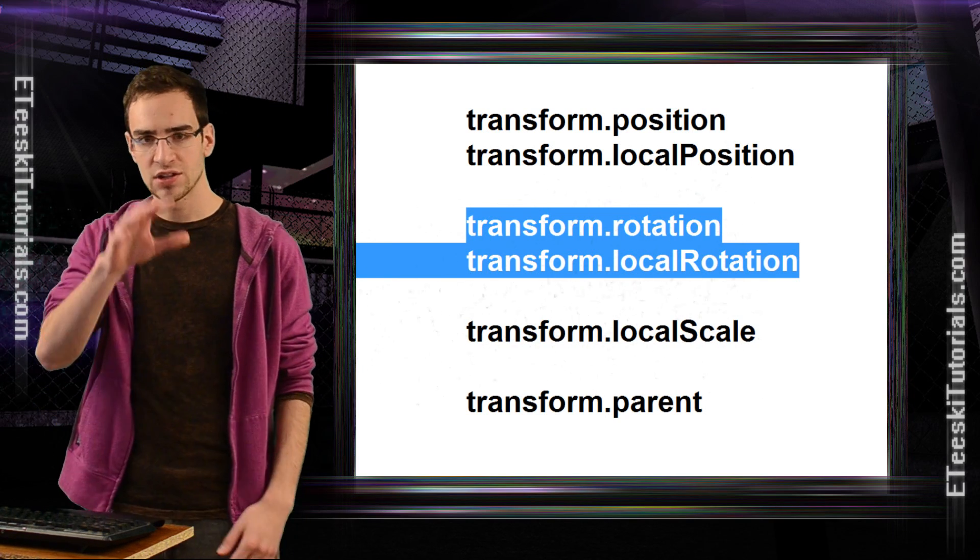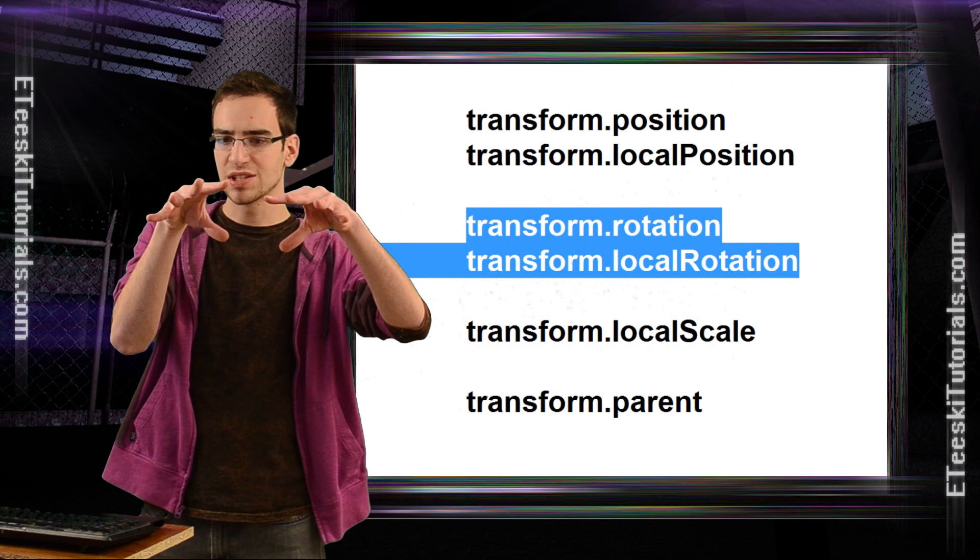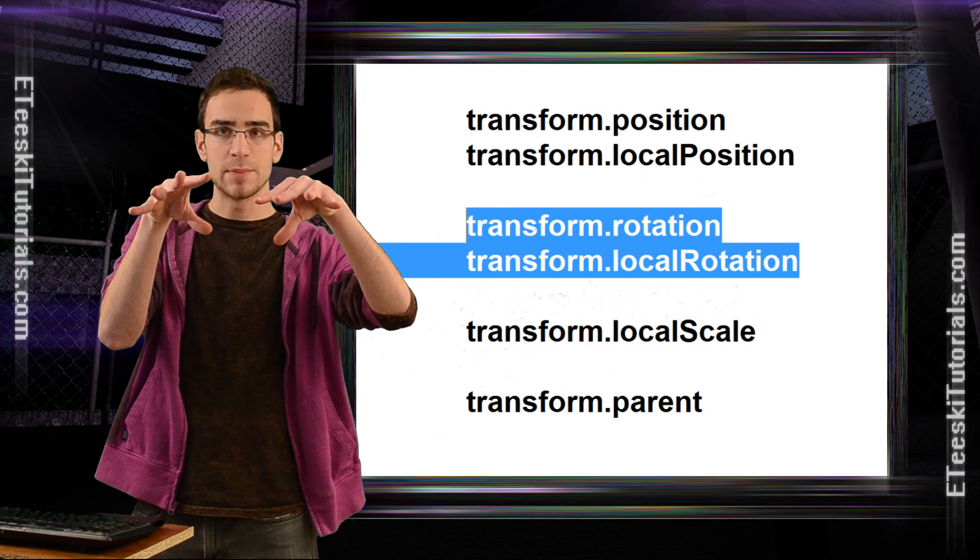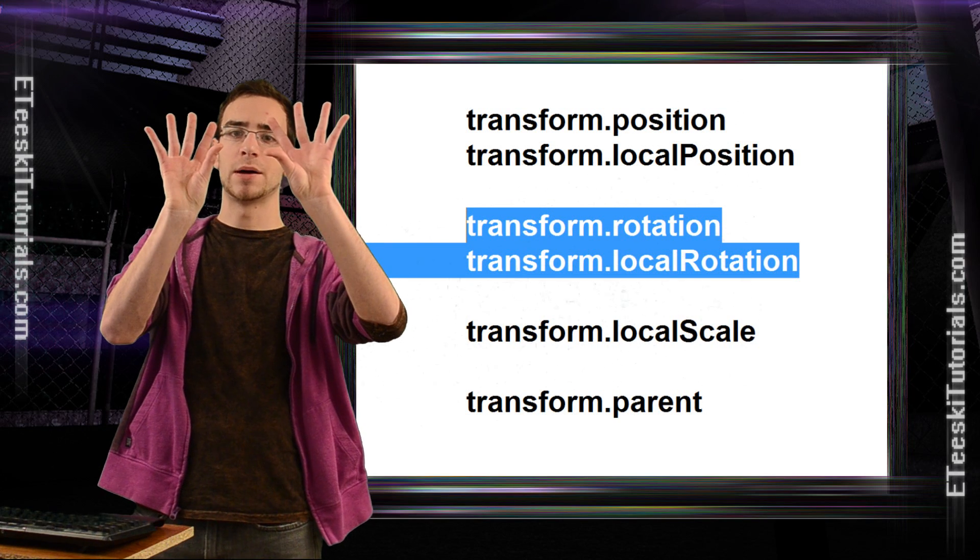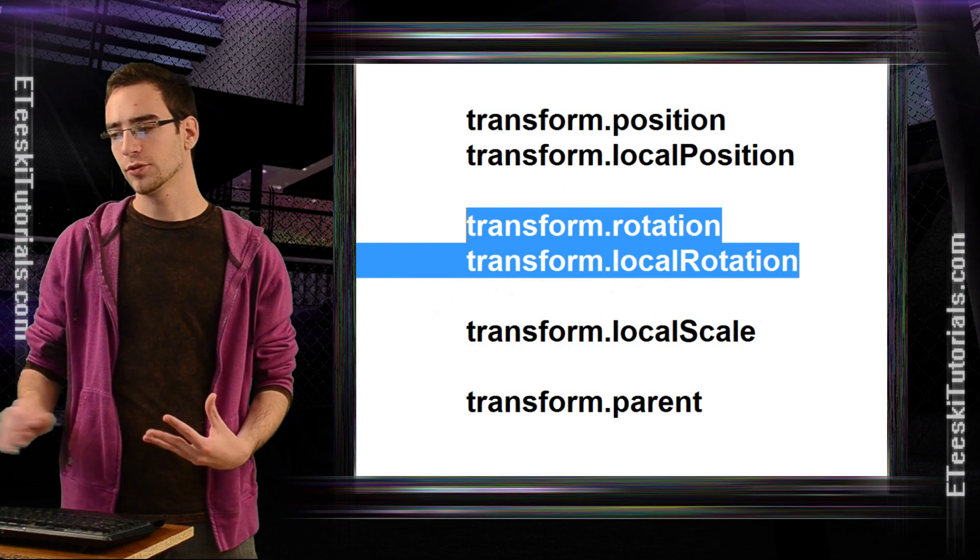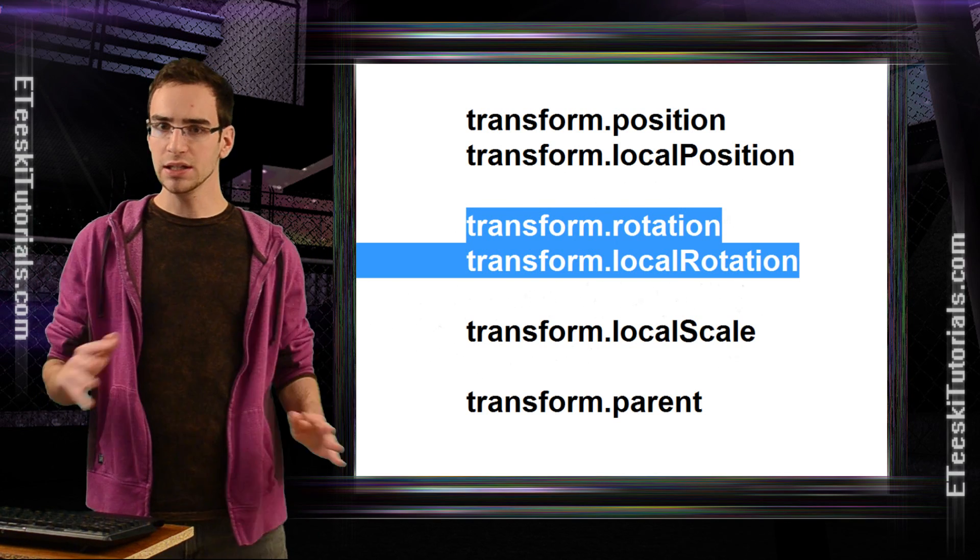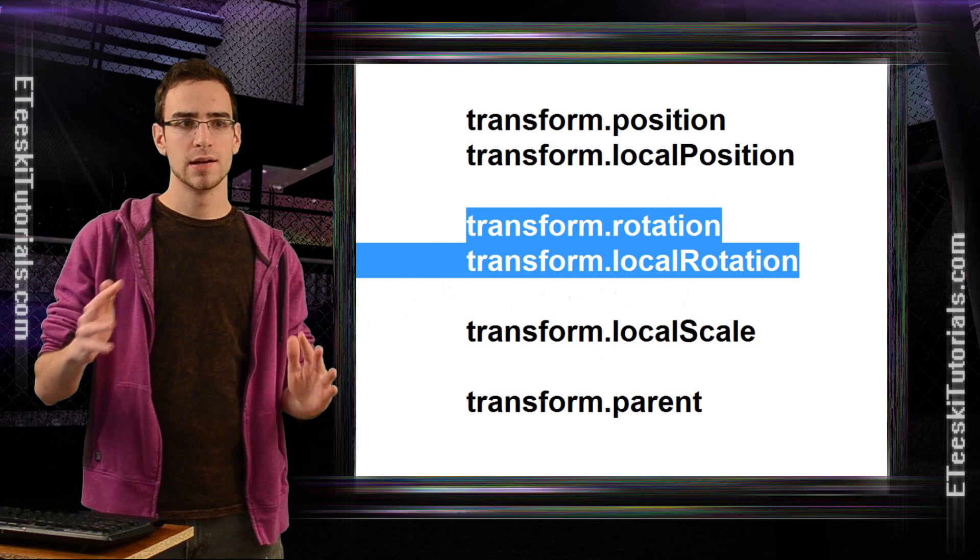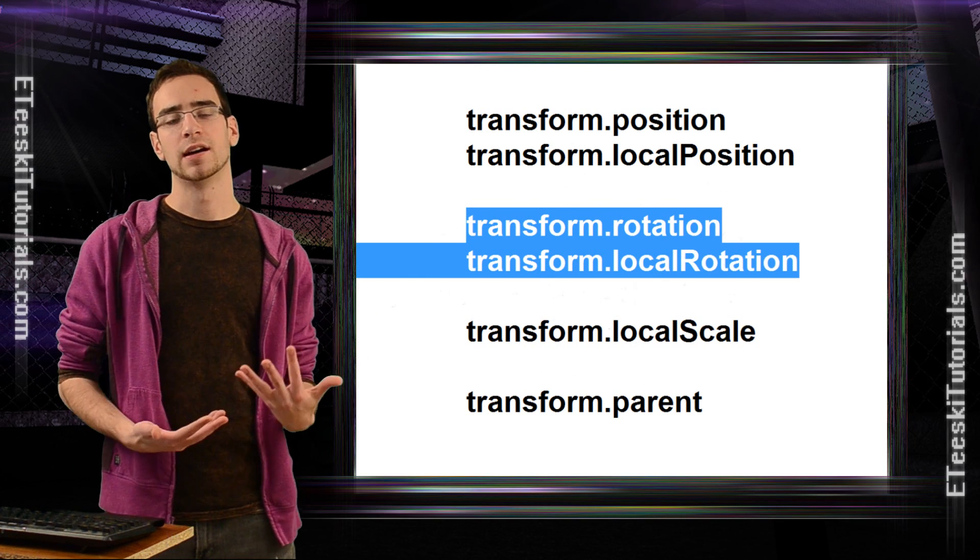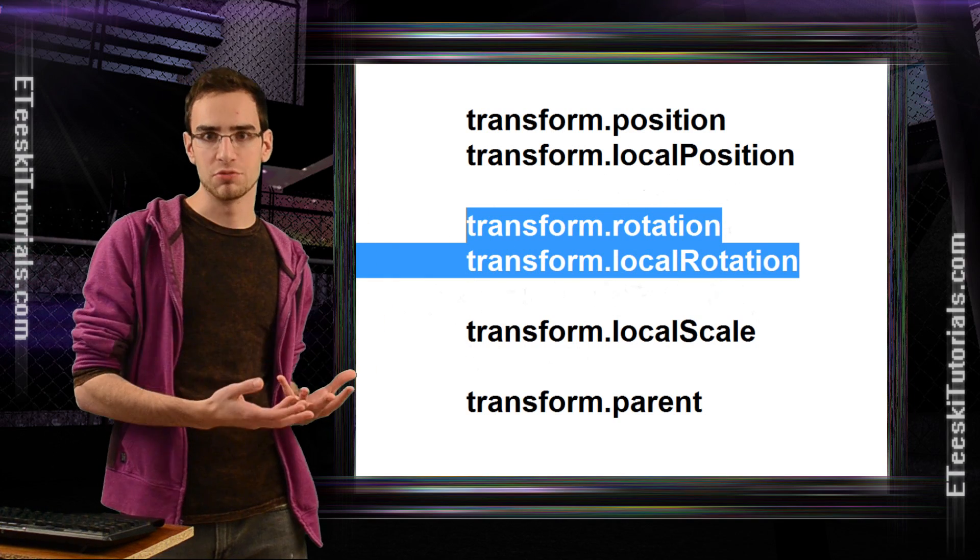When we have a rotation like this game object is looking this way and we make it a child of a game object that's looking this way, and then we rotate this game object up like that, this other game object is going to follow. So it's the exact same thing. Transform.rotation gives us back the rotation in real world 3D space completely regardless of its parent, but after the fact that its parent has rotated its child according to its own rotation.